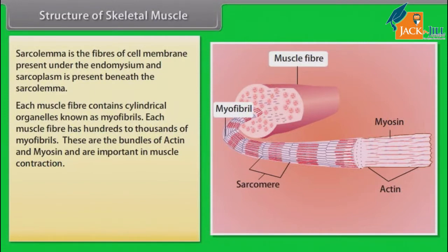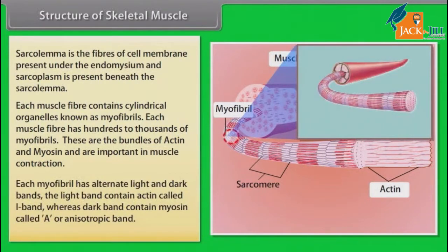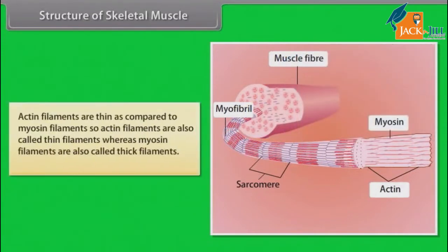Myofibrils are bundles of actin and myosin and are important in muscle contraction. Each myofibril has alternate light and dark bands. The light bands contain actin, called the I-band, whereas the dark band contains myosin, called the A or anisotropic band. Actin filaments are thinner than myosin filaments, so actin filaments are also called thin filaments whereas myosin filaments are called thick filaments.